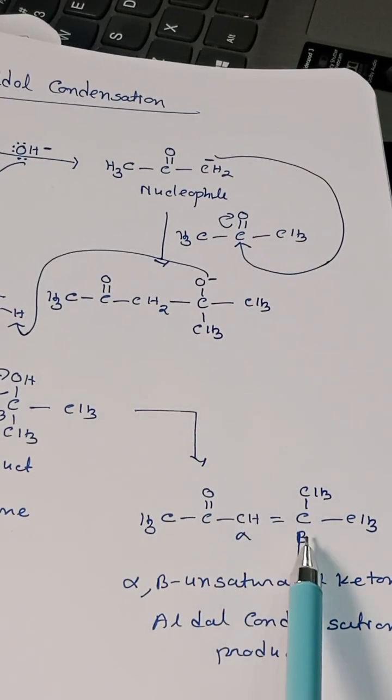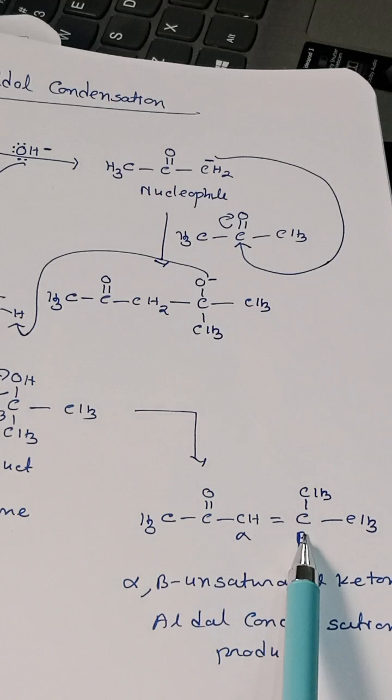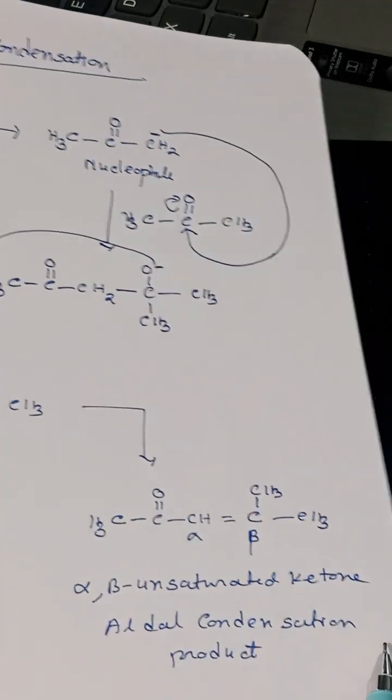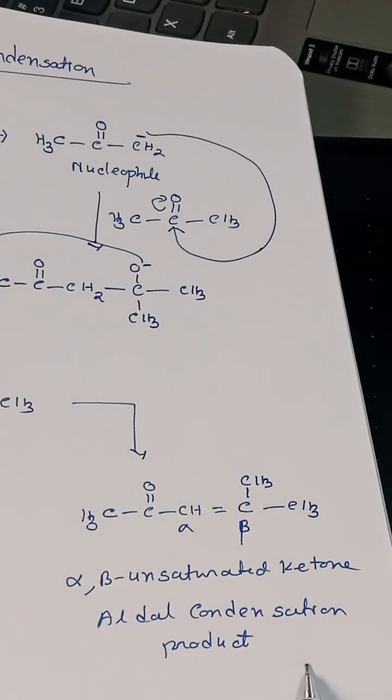So this is alpha and beta; there is a double bond, so it's called alpha, beta unsaturated ketone. This is the aldol condensation product.